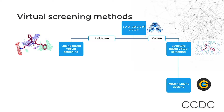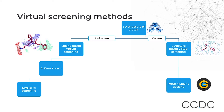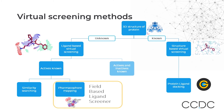If active compounds are known, similarity searching can be used — a 2D method for which CSD Discovery also has a similarity search method available through the CSD Python API. Alternatively, there is a pharmacophore mapping method where a CSD field-based ligand screener is available to do this kind of work.